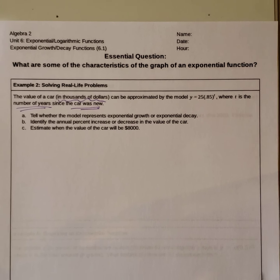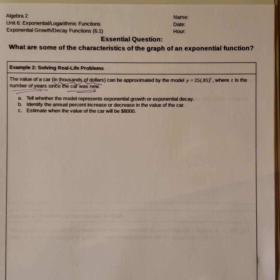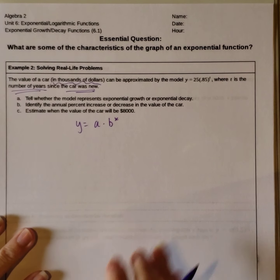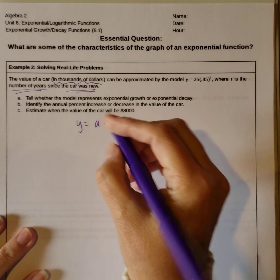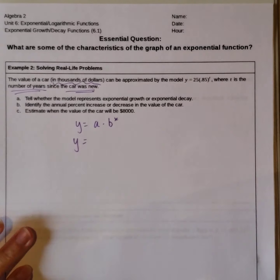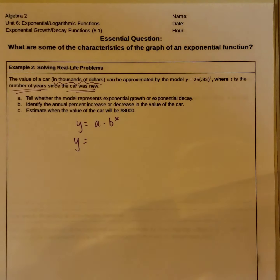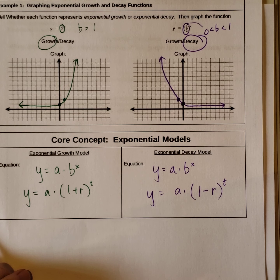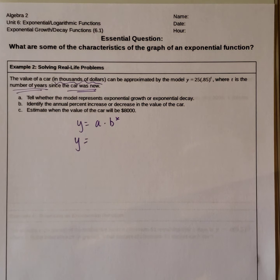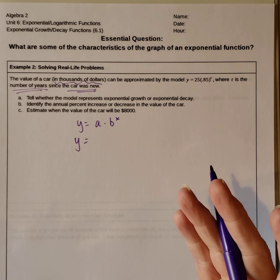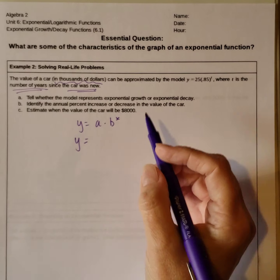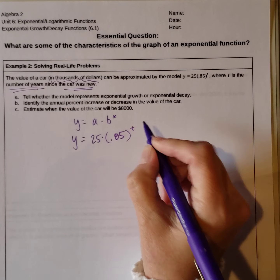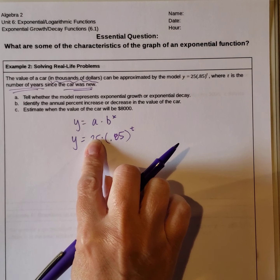So we have this form, y equals a times b to the x that we're starting with. And we just looked at y equals a times 1 plus r to the t or y equals a times 1 minus r to the t, depending on whether it was growth or decay. So we are looking at 25 times .85 to the t. So a is our initial amount, which is 25.